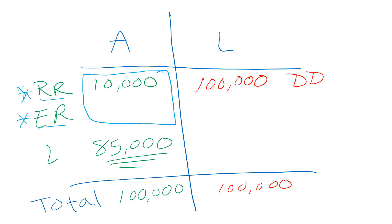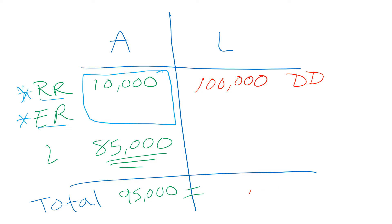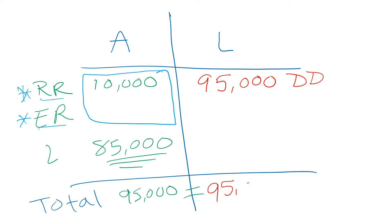If we take five thousand away from excess reserves, that changes our total. Eighty-five plus ten is ninety-five, so total assets become ninety-five thousand. And since assets must equal liabilities, there's a change on the liability side too. Luis withdrew five thousand from his checking account, so the bank owes five thousand less — demand deposits are now ninety-five thousand. Ninety-five thousand plus zero equals ninety-five thousand. Our balance sheet balances.